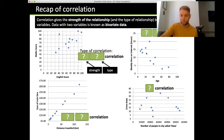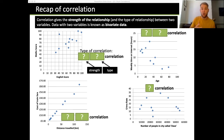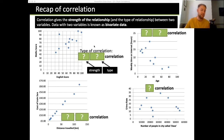Here we've got some scatter graphs showing different types of correlation. We're looking at the strength of the correlation and also the type of correlation. The strength is how close the points are to a straight line. Looking at the top left graph, we can see there is a kind of correlation going up, but the dots are a little bit all over the place. So this is a weak positive correlation, because as one increases the other one increases as well.